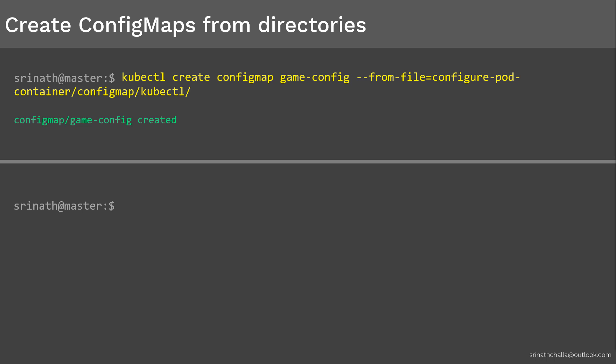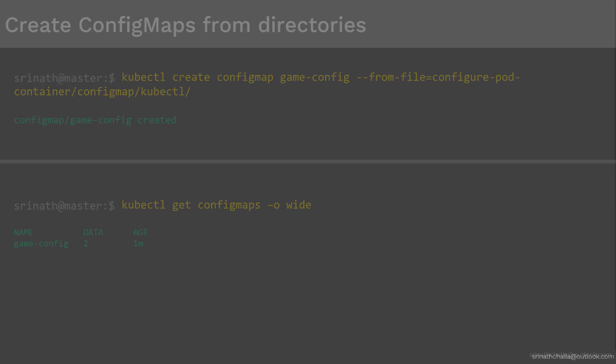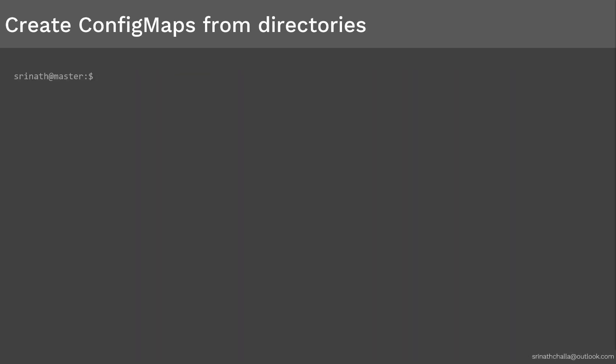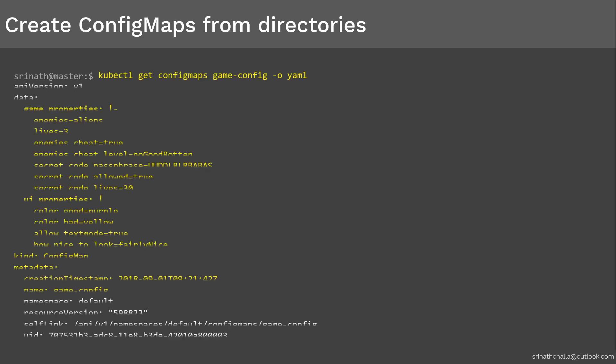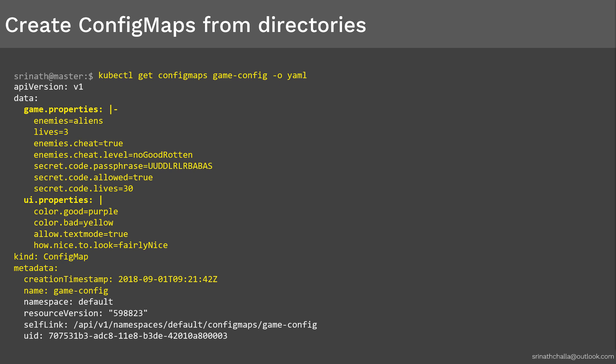To display the ConfigMaps, we use the kubectl get command. Next, to see the configuration we passed into the ConfigMap, we need to print the output in YAML format. Here it is — that's exactly the data we passed into the ConfigMap. The game.properties and ui.properties files in our target directory are represented in the data section of the ConfigMap. That's how we create a ConfigMap using multiple files combined inside a directory.